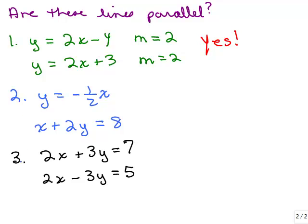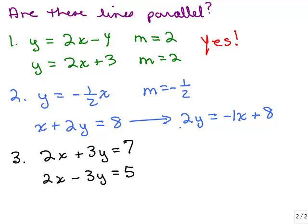Now for number 2, y equals negative 1 half x is in slope intercept form, so the slope is negative 1 half. But the second one is not in slope intercept form, so we're going to have to do a little work to figure out the slope by solving for y. We have 2y equals negative x plus 8. Dividing by 2, the slope is also negative 1 half, just like the first line. So they both have a slope of negative 1 half, so yes, those 2 lines are parallel.